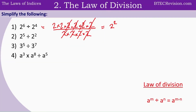Pause the video and complete the rest of the questions. At question 2, we have 2 to the power of 5 take away 2, which is equal to 2 to the power of 3. Question 3, we have 3 to the power of 5 take away 7, which gives us 3 to the power of negative 2. For question 4, we have 2 to the power of 6, so we add 8 and then take away 5, giving us 2 to the power of 9.